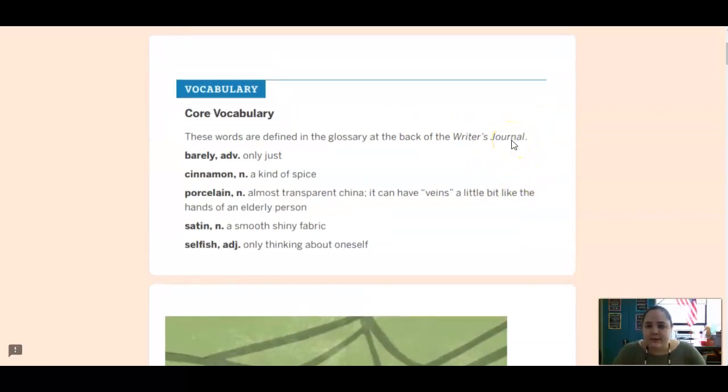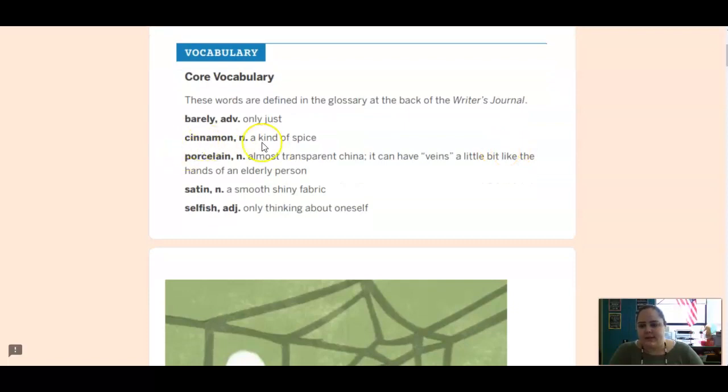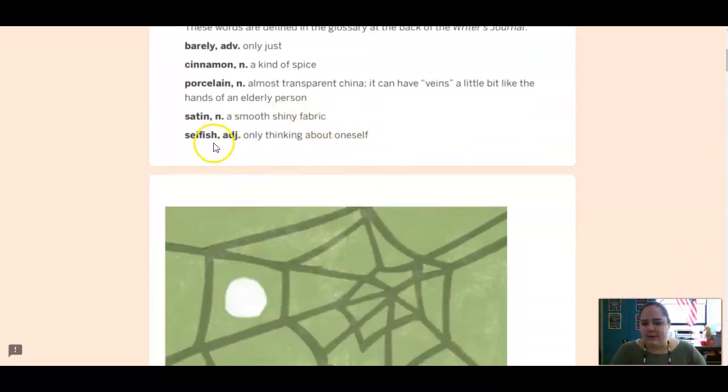So here's your vocab. Barely is an adverb which means only just. So if you're barely 10 years old you just turned 10 years old. Cinnamon is a noun and that is a kind of spice. Porcelain is a noun and that is china which is like really nice dishes and they have kind of veins in them which kind of look like if you're kind of older you might have those type of veiny hands. When you get older your veins kind of pop out more so they're talking about porcelain which is those veins popping out of your hands. Satin is a noun and that is a smooth shiny fabric. And then selfish is an adjective which means you're only thinking about yourself.